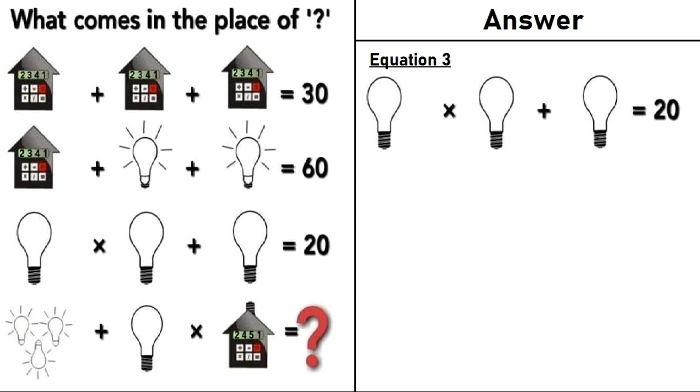Moving on to equation number 3. We have a bulb times a bulb plus a bulb is equal to 20. 4 times 4 plus 4 is equal to 20. A bulb is equal to 4.